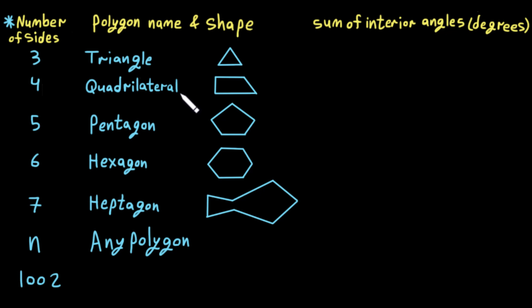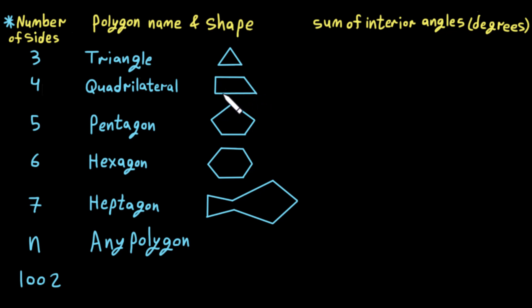In this video we'll do a proof of the sum of interior angles of a polygon using a visual method, by splitting the polygon into triangles. As we know, a polygon is a closed shape made of straight line segments, like a triangle, like a quadrilateral — all of these are closed and made of straight line segments.